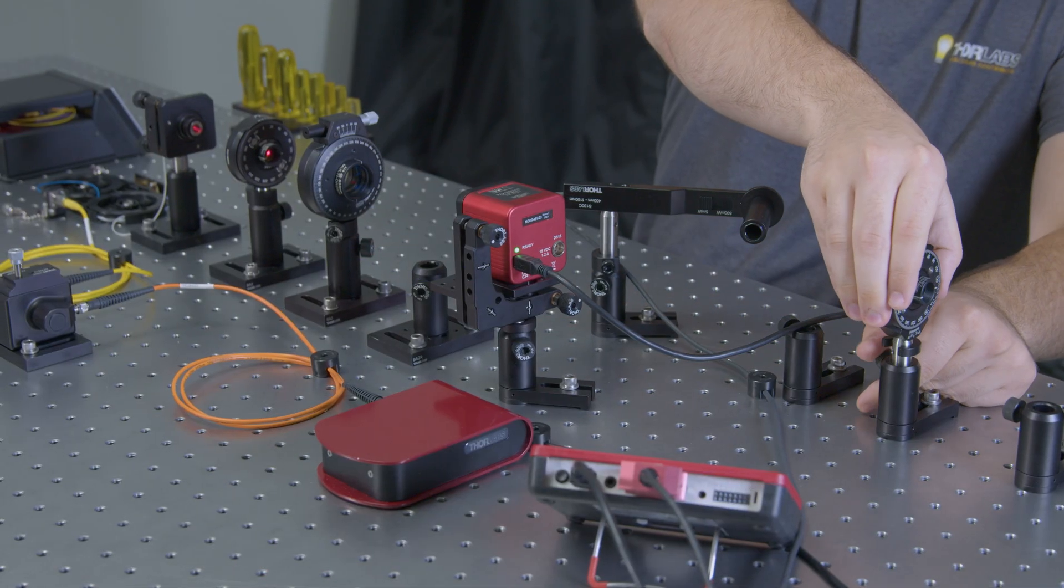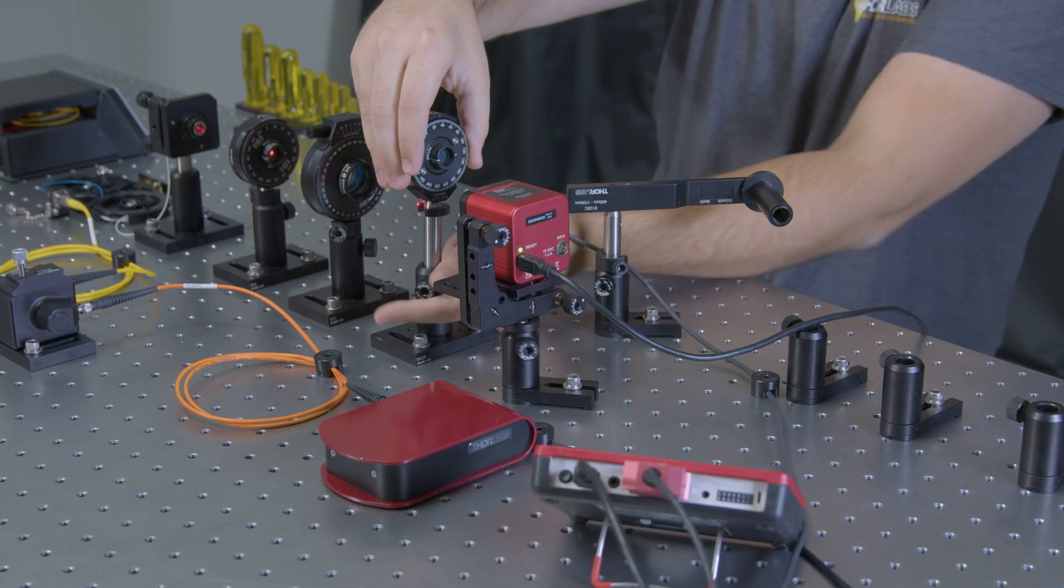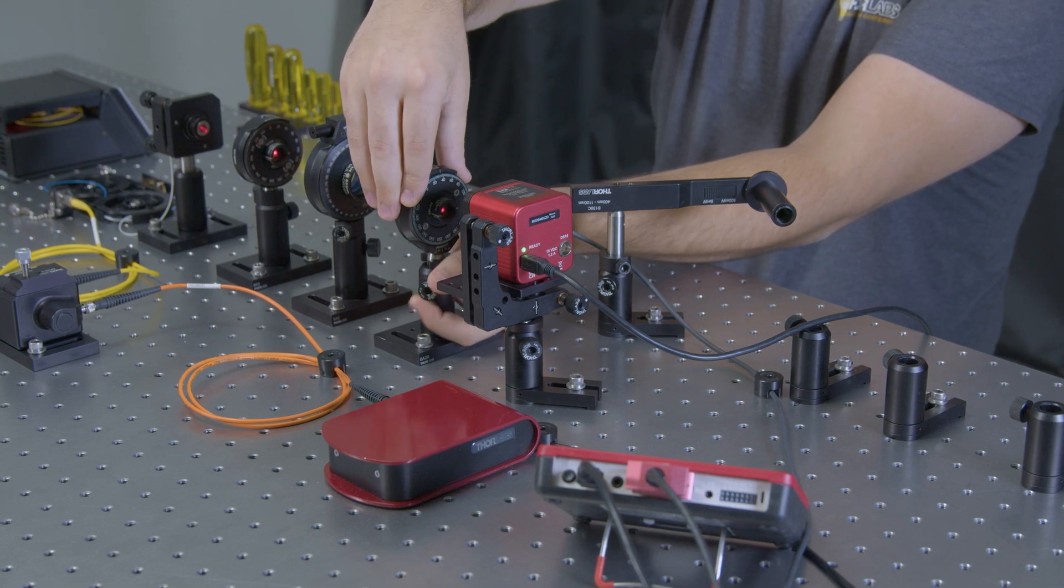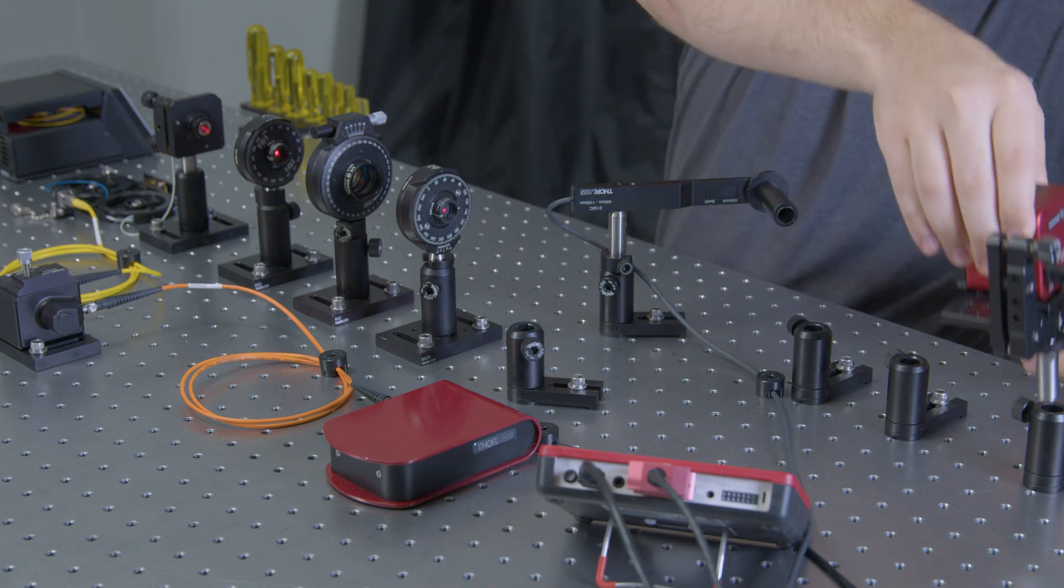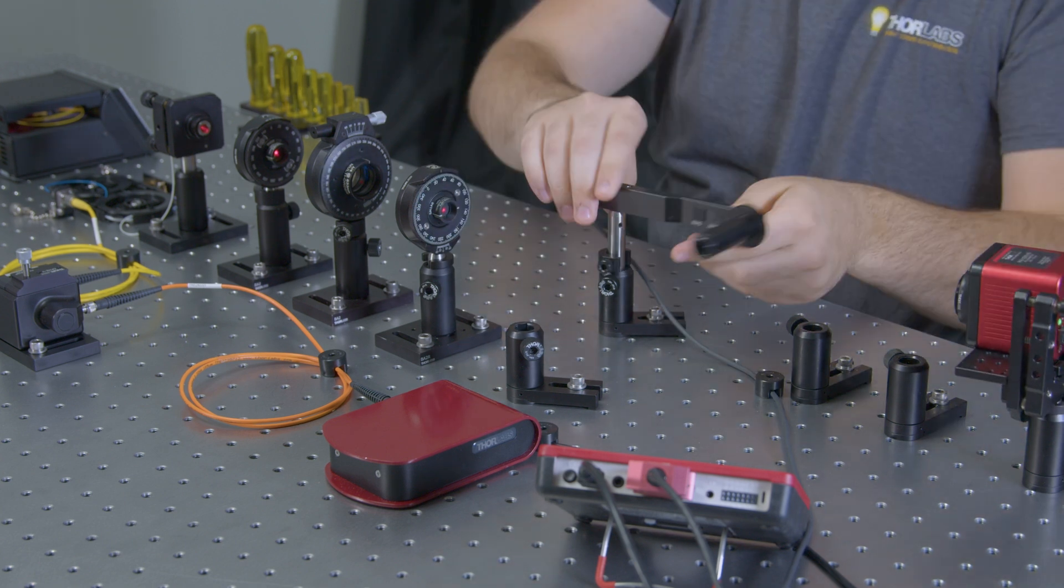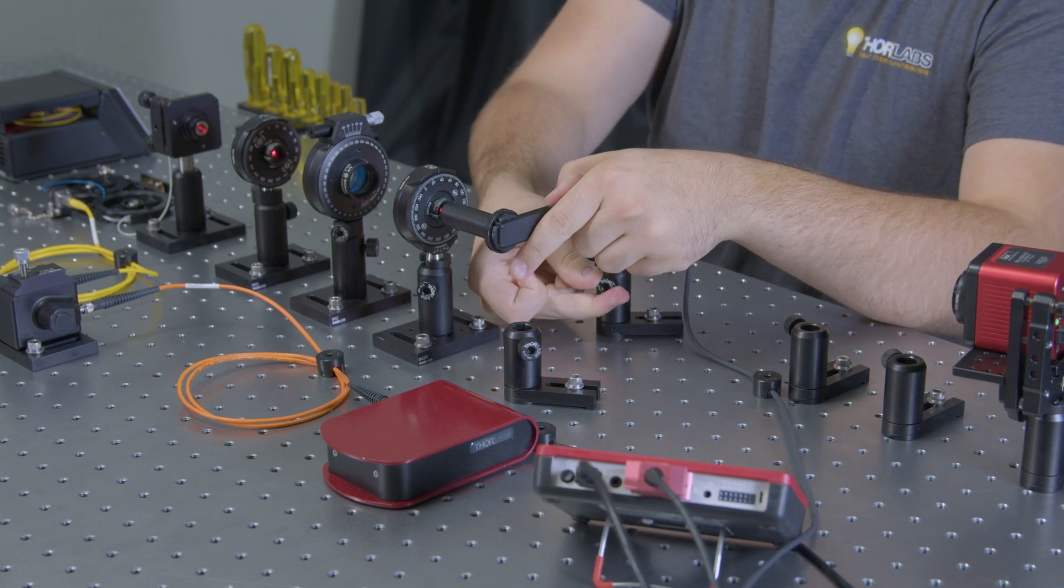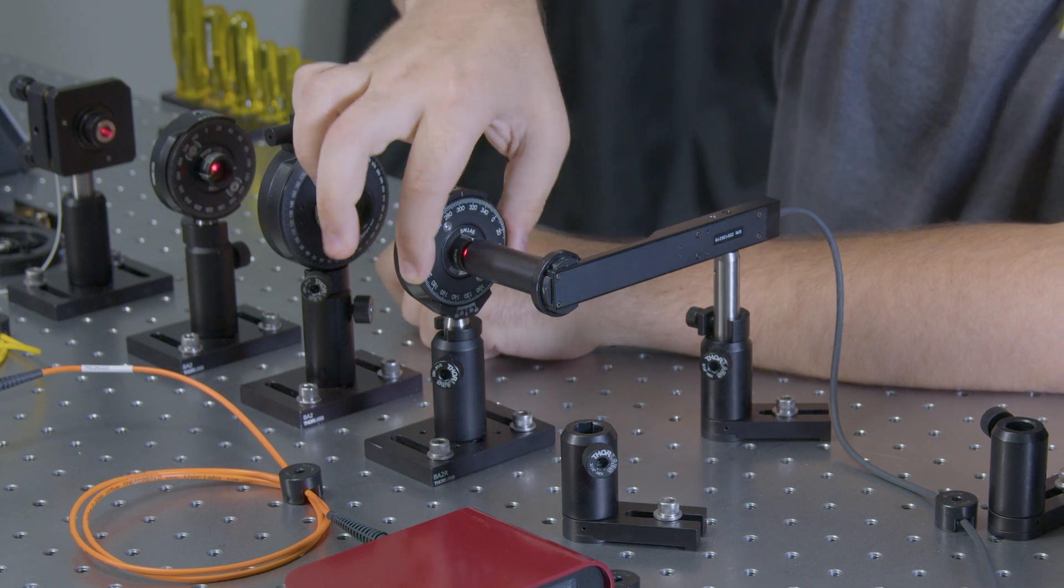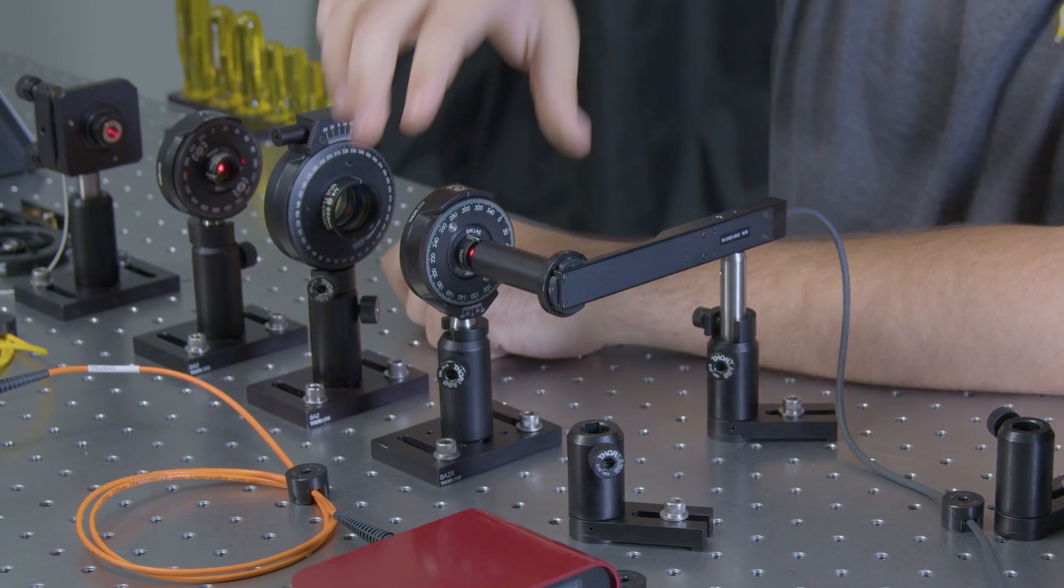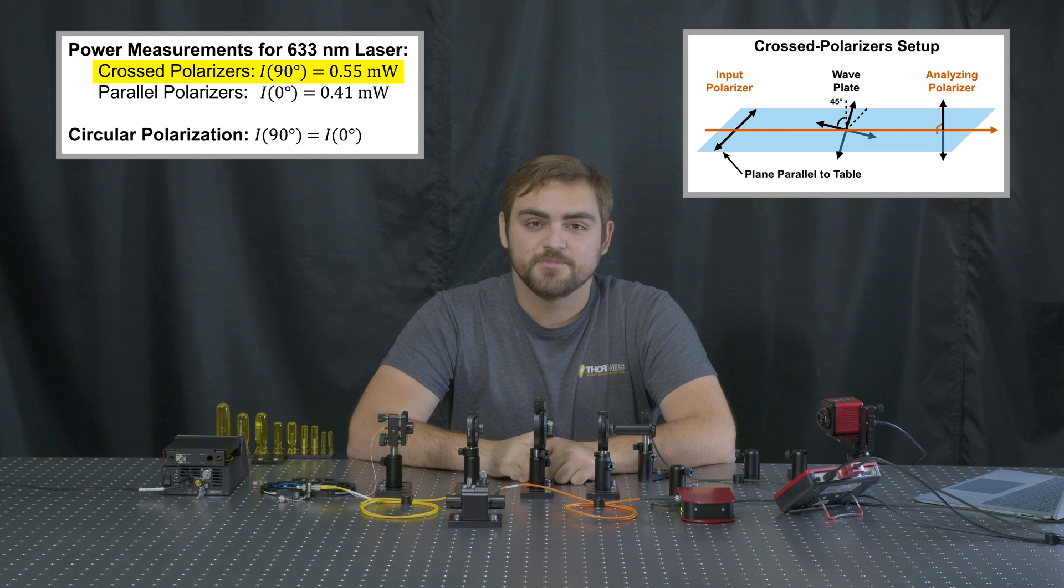Let's insert our analyzing polarizer back into the path now, and we'll rotate it to its crossed position. Based on our last measurement, we know that this was the higher power of the two, so we know that a decrease here will correspond with getting closer to a true quarter wave of retardance.